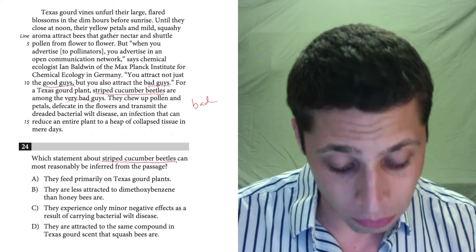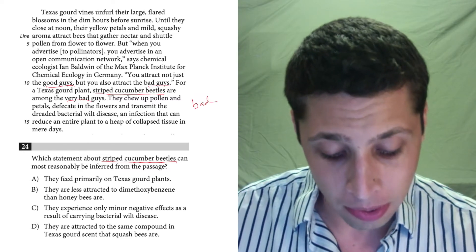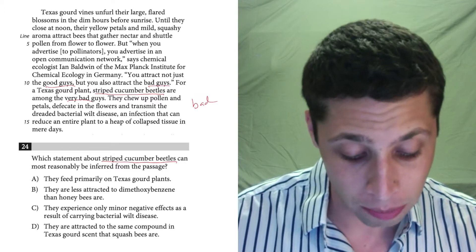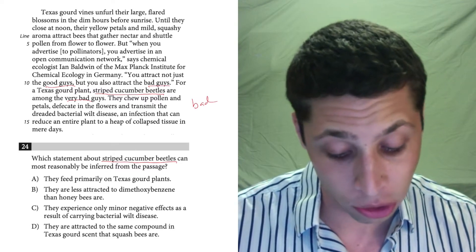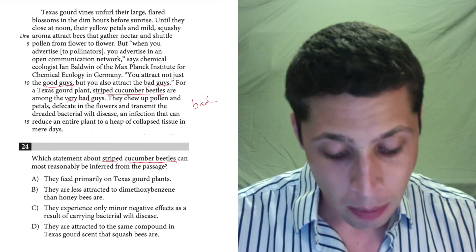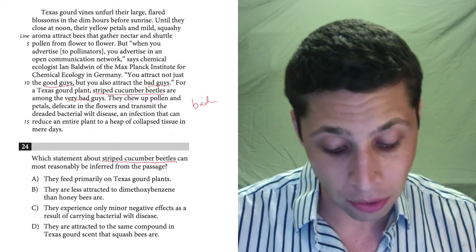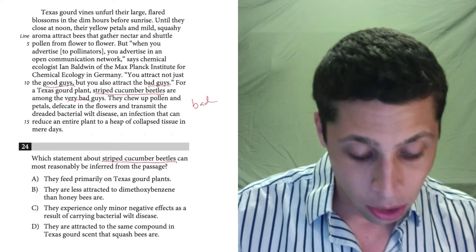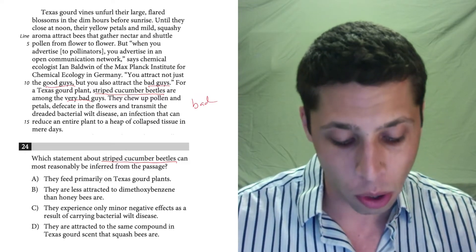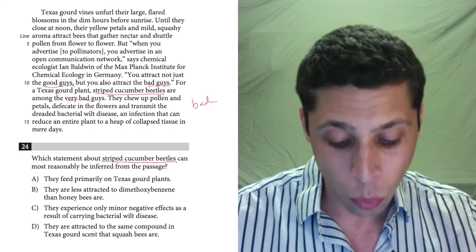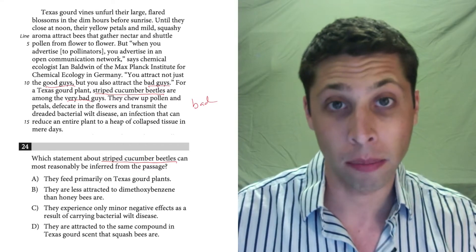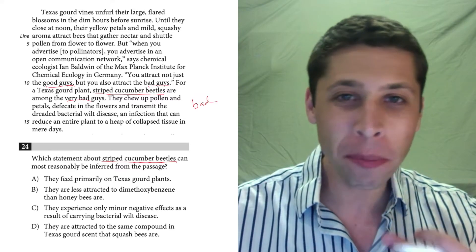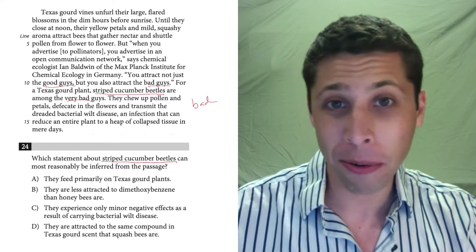Texas gourd vines unfurl their large flared blossoms in the dim hours before sunrise until they close at noon. Their yellow petals and mild squashy aroma attract bees that gather nectar and shuttle pollen from flower to flower. But when you advertise to pollinators, you advertise in an open communication network, says chemical ecologist. You attract not just the good guys, but you also attract the bad guys, which we know are the striped cucumber beetles. So these beetles have something to do with the flower and the bees.